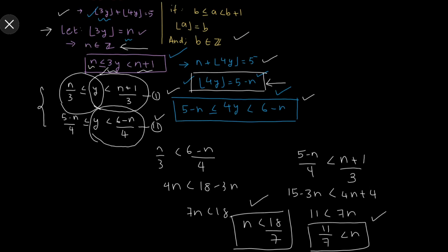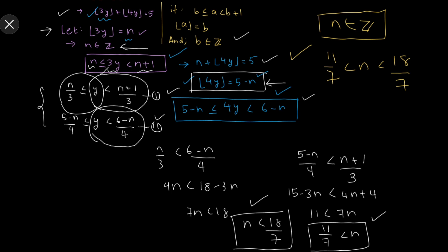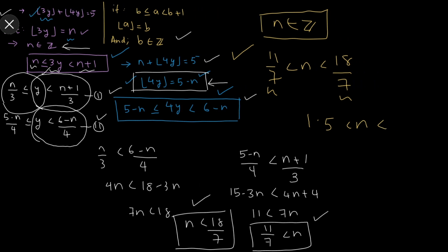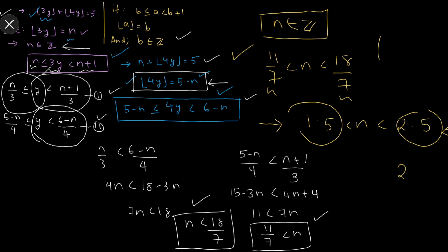We have the range for n: n > 11/7 and n < 18/7. Since n must be an integer, and 11/7 ≈ 1.57 and 18/7 ≈ 2.57, the only integer in this interval is n = 2.